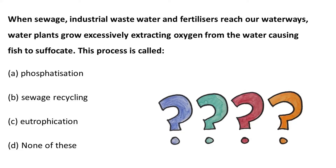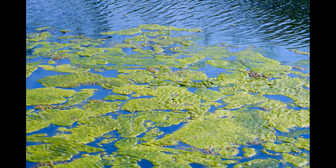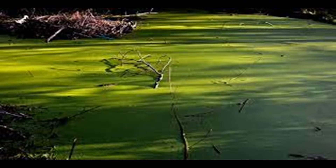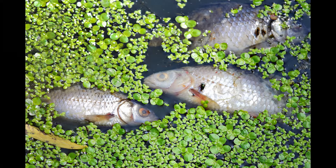The answer is eutrophication. Eutrophication occurs when nutrients in water increase, causing aquatic plants and algal growth to increase. Because of this excessive plant growth, these plants consume the oxygen in the water, depleting it for fish and other aquatic life forms. This process is called eutrophication.